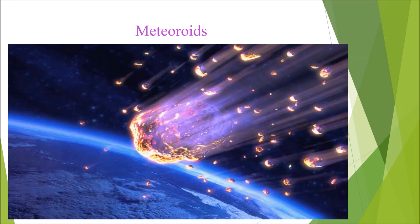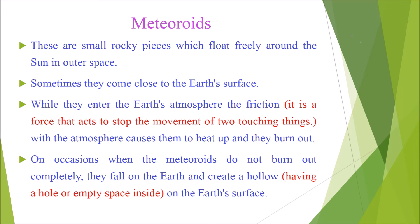Next, we are going to learn about meteoroids. Meteoroids are small rocky pieces which float freely around the sun in outer space. Sometimes they come close to the Earth's surface. While they enter the Earth's atmosphere, friction — a force that acts to stop the movement of two touching things — causes them to heat up and burn out. On occasions when meteoroids do not burn out completely, they fall on the Earth and create a hollow, meaning a hole or empty space, on the Earth's surface.